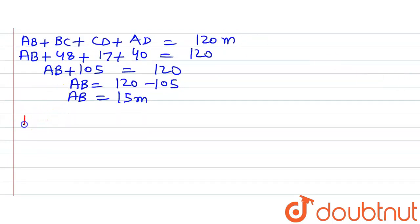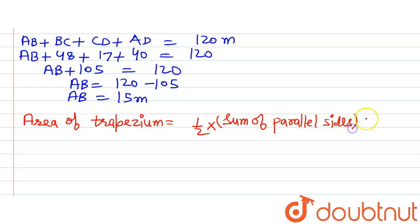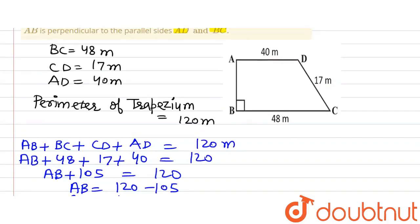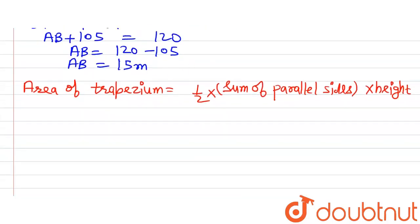So area of trapezium is equals to half multiplied by sum of parallel sides multiplied by height. So here the height is AB and the parallel sides are AD and BC. So let's do it.